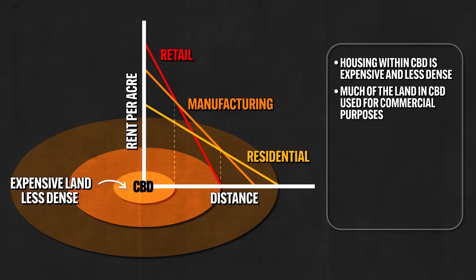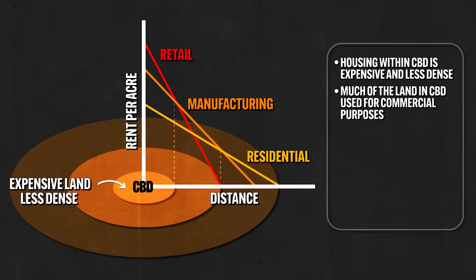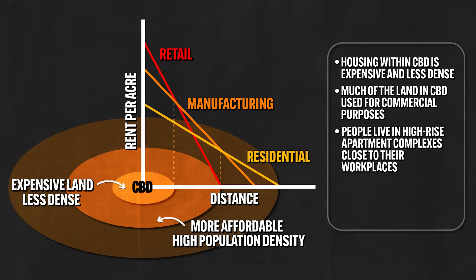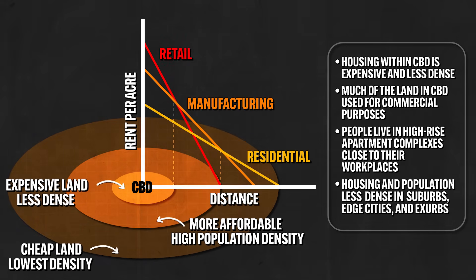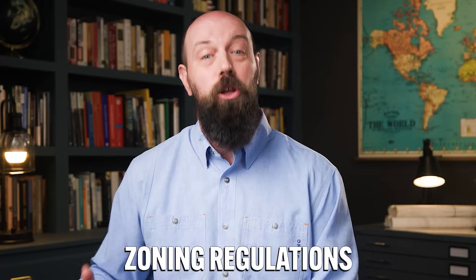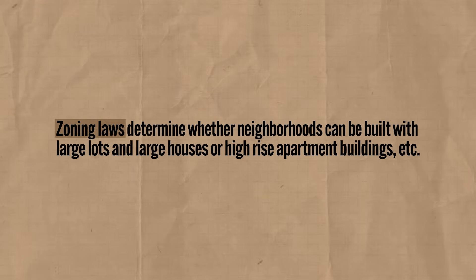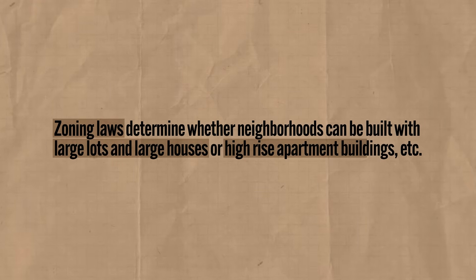Much of the land in the CBD is used for commercial purposes, which leaves little room for residential buildings. Slightly removed from the CBD, population density is high and people tend to live in high-rise apartment complexes because the cost of living is lower and it's close to people's workplaces. The further we get from the CBD into the suburbs, edge cities, and exurbs, the less dense the housing and population will be. Variations in population density reflect the different kinds of zoning regulations enacted by local governments — laws that dictate how land can be used: residential, commercial, industrial, etc. These ordinances set limits on the density and size of lots, determining whether neighborhoods can be built with large lots and large houses or high-rise apartment buildings, which plays a big role in how cities are spatially arranged.